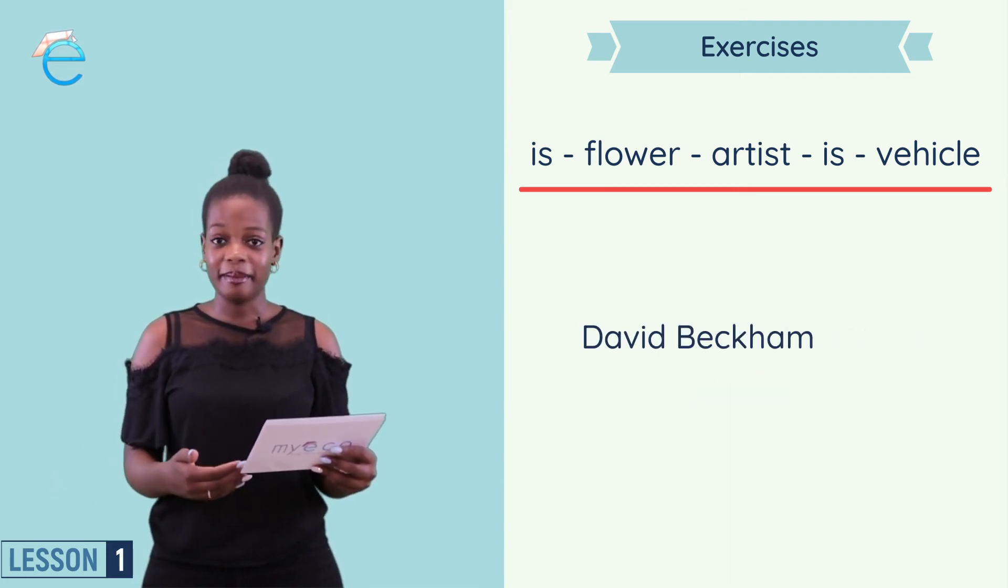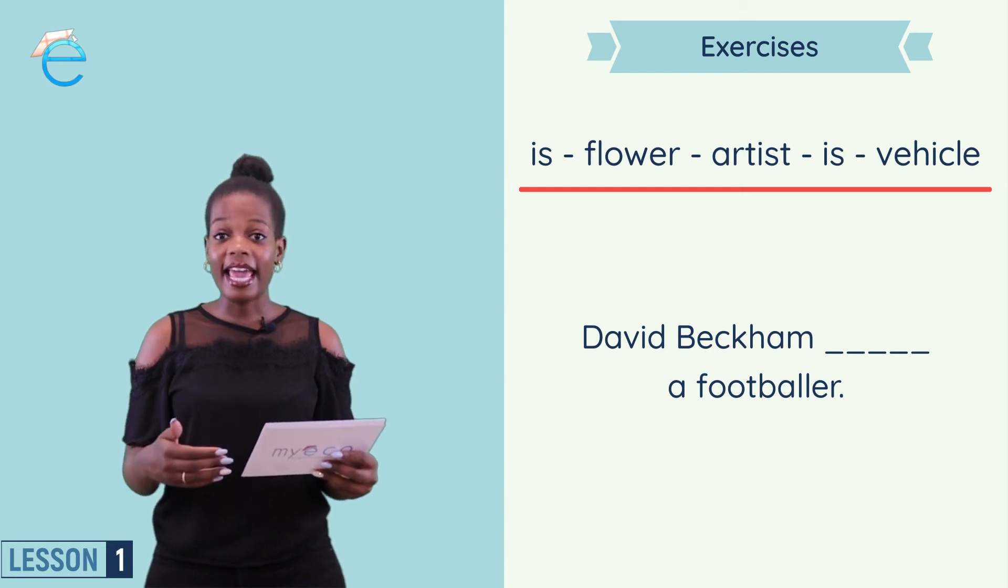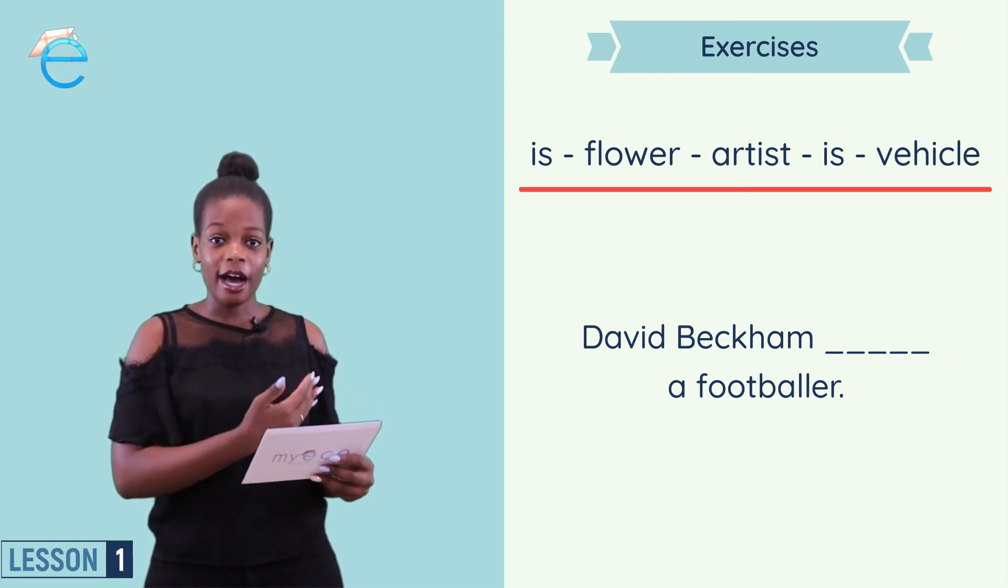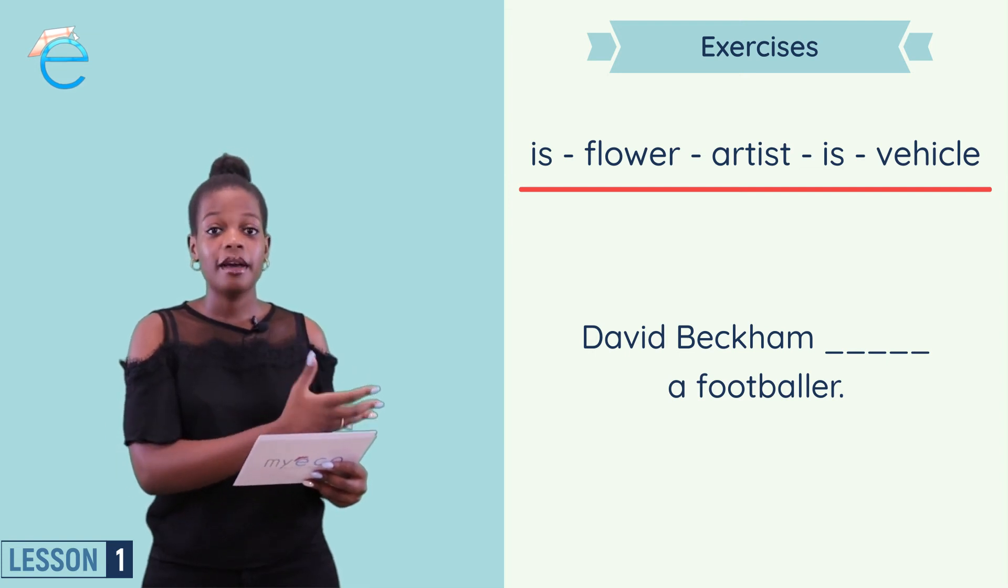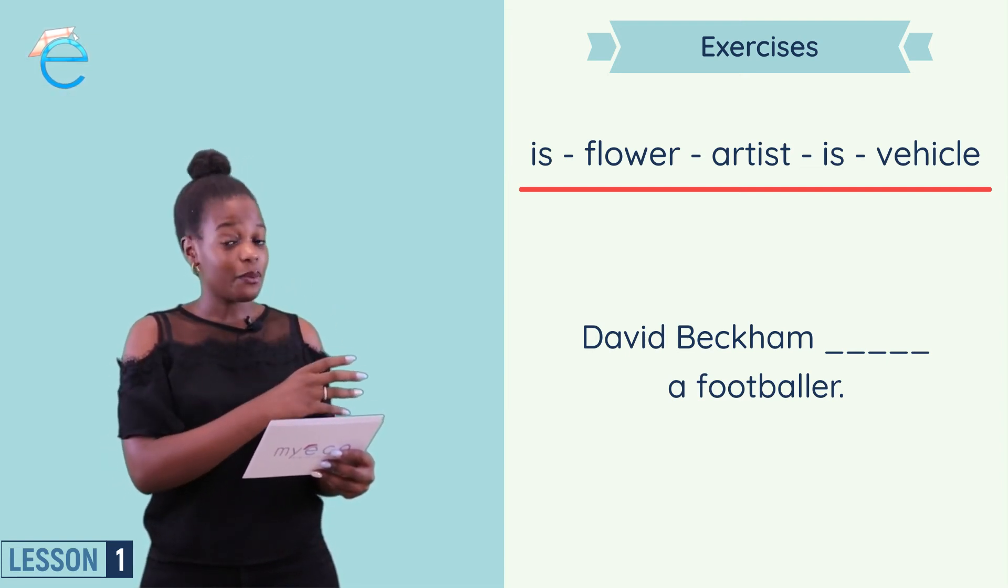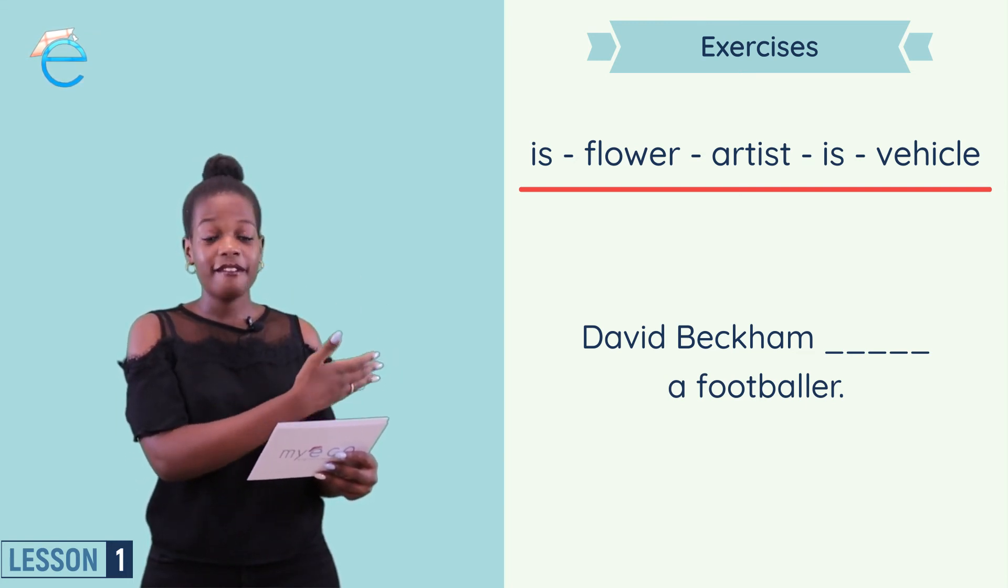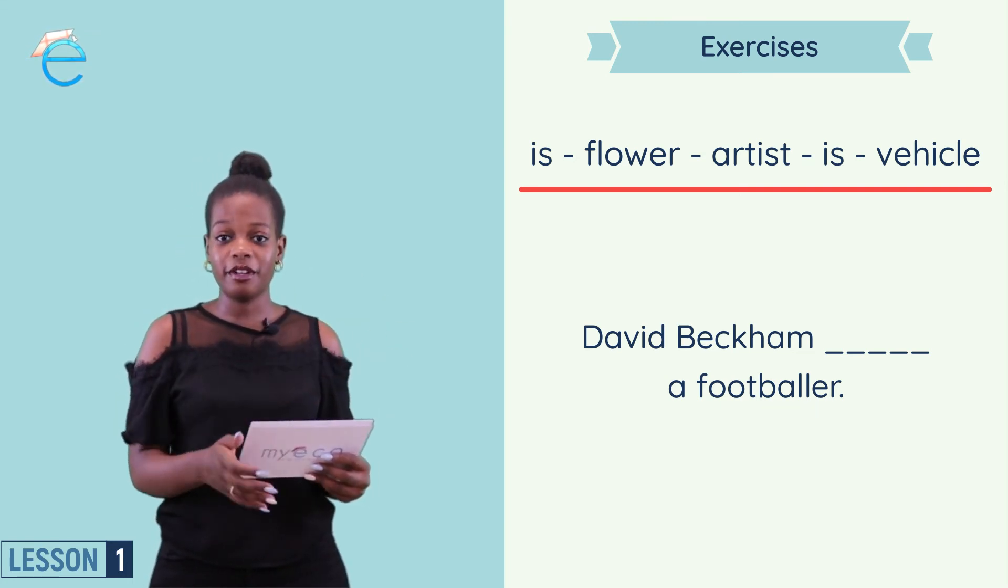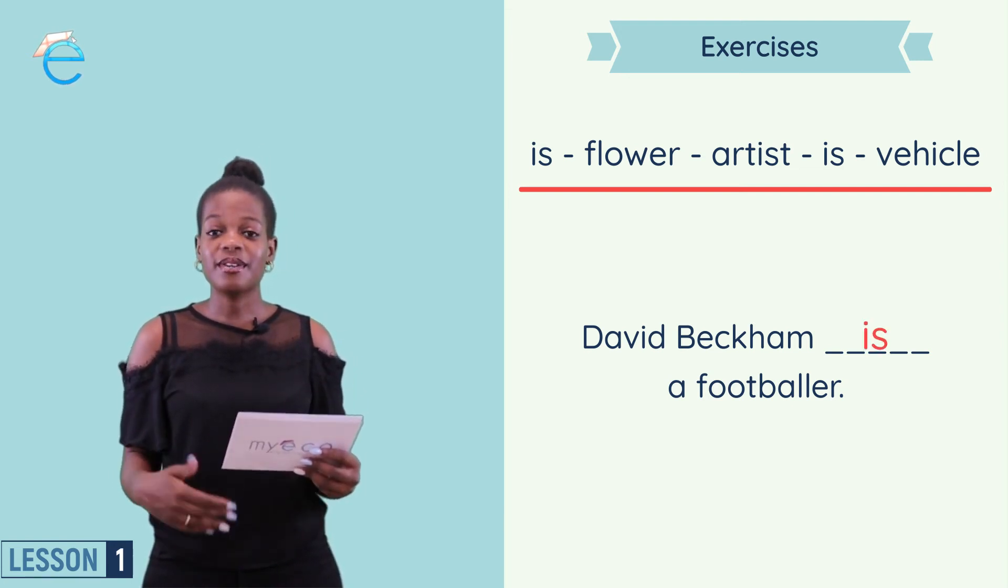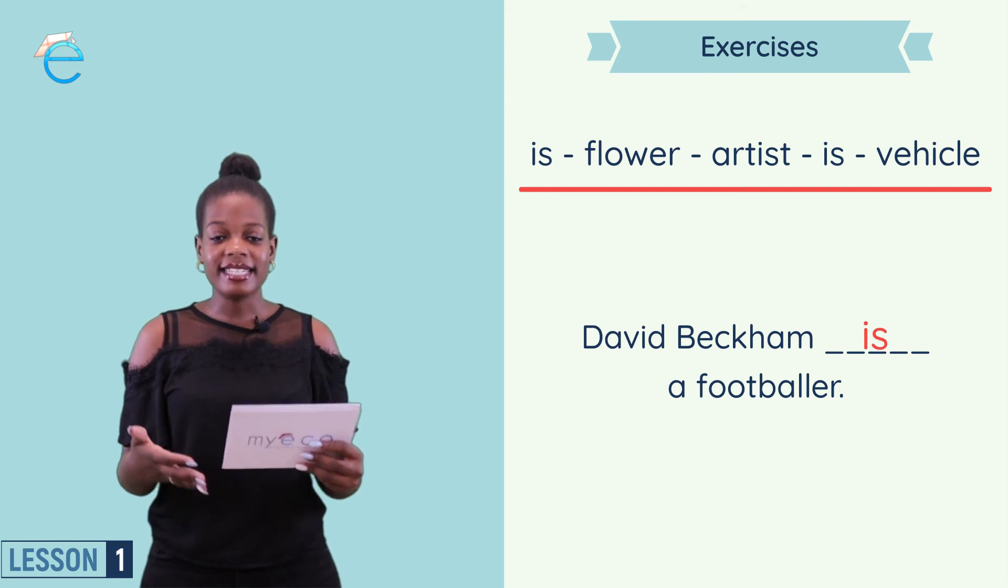To David Beckham blank a footballer. So we can see here noun plus is plus noun. My first noun David Beckham is. We don't have is. Next noun a footballer. We have a footballer. So what's missing is the middle part is. So David Beckham is a footballer.